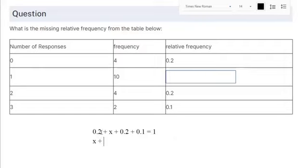So if we add up all the constants over here, 0.2 plus 0.2 plus 0.1 makes 0.5. And then if you subtract that 0.5 from both sides, you get x is 0.5. So that's the relative frequency that's missing here.